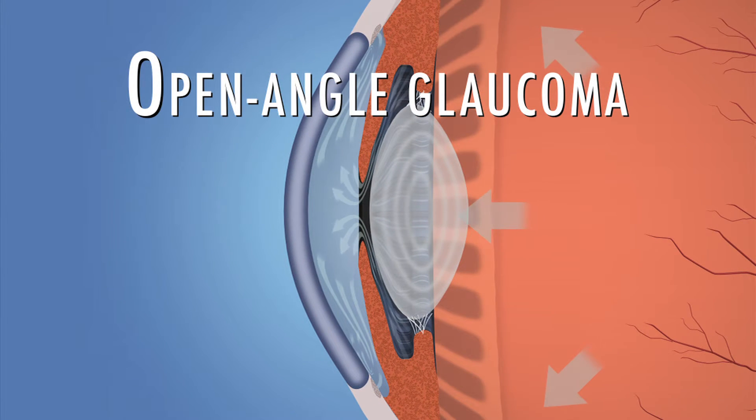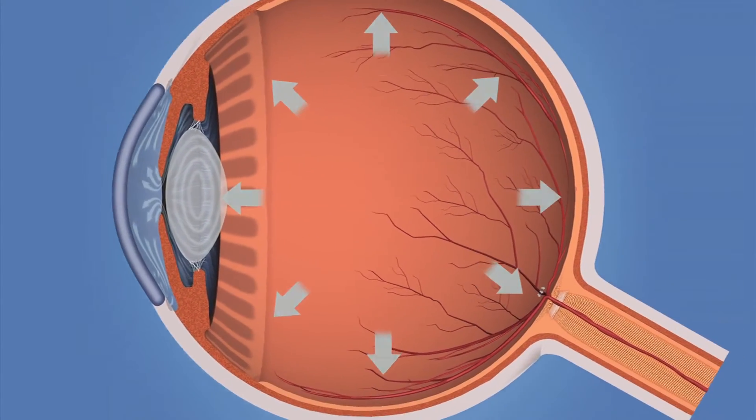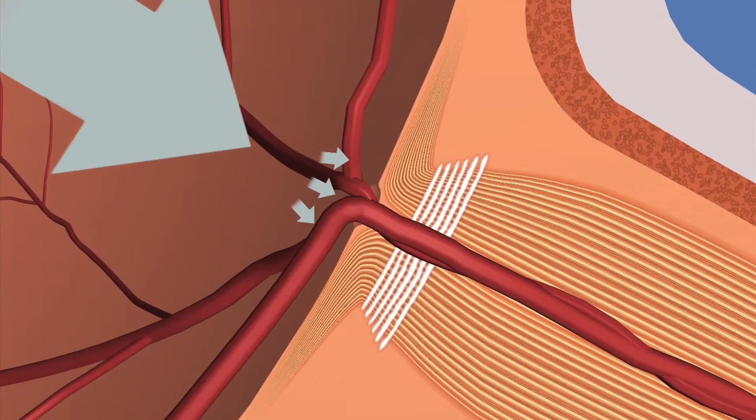Fluid pressure in the eye increases, and this extra force presses on the optic nerve in the back of the eye, causing damage to the nerve fibers.